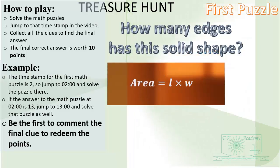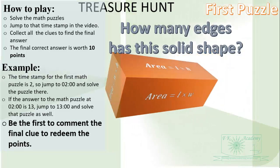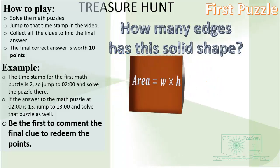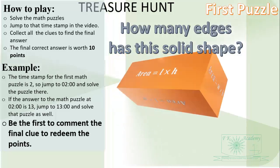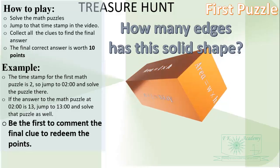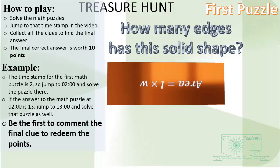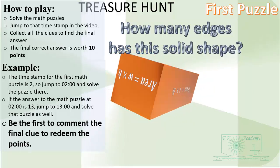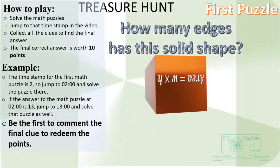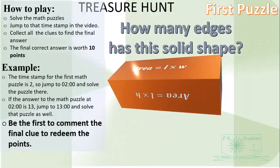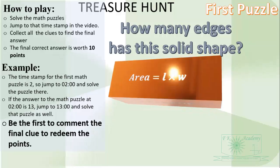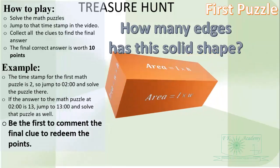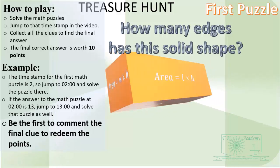Solve that one too and then add the answer to the 14. So if the next answer you got is 7, then it will be 1-4-7. If the next answer you got is 10, then the updated answer will be 1-4-1-0.